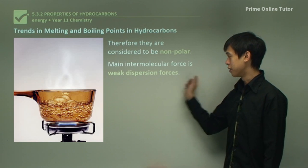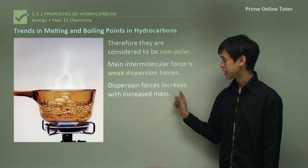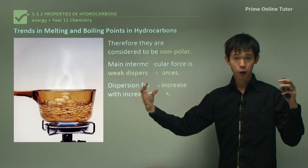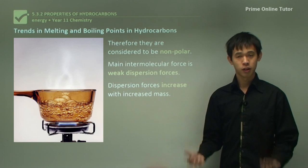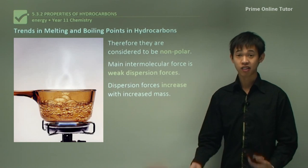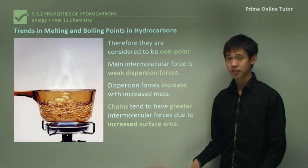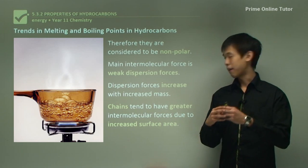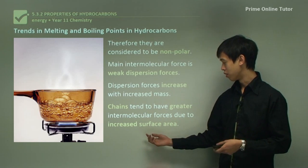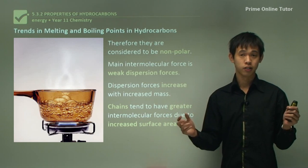The main intermolecular force in hydrocarbons is dispersion forces, which are very weak as you know from your study of water. Dispersion forces increase with increased mass — the more components of your hydrocarbon that you have, the more dispersion forces you have — because there are more electrons and more protons as well as an increased surface area. Chains tend to have greater intermolecular forces because of the increased surface area, so a straight chain will have more intermolecular forces than a branched structure.